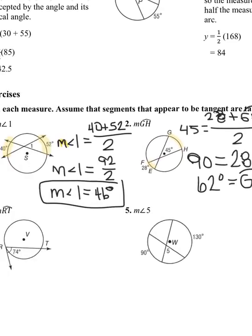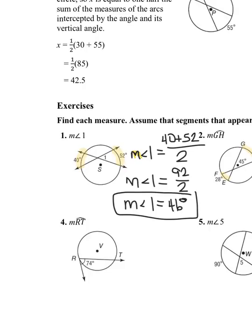Next, question four wants the measure of arc RT — it only has two letters, so the arc measure is the bottom section. This time they gave us the angle. The angle equals the arc measure divided by two. I want to get the arc measure by itself, so the opposite of dividing by two is multiplying by two. Multiply both sides by two: 148 degrees equals arc RT.